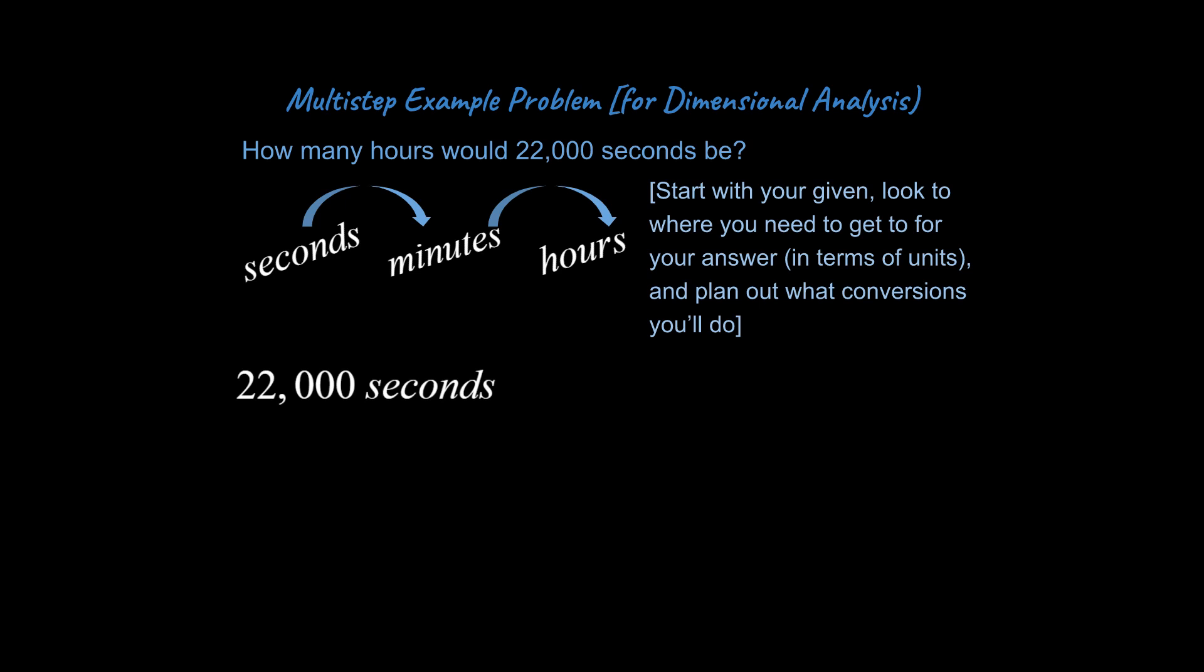So I start by writing my given with my units and focus on the units. And I have seconds down below here. I need these seconds in the denominator because I need to cancel out these seconds over here. And what would I need on the bottom to cancel out minutes over here? What would I need for my units on the bottom over here?